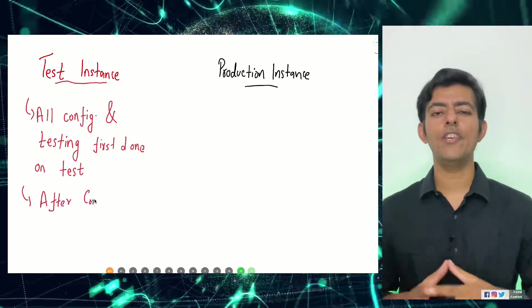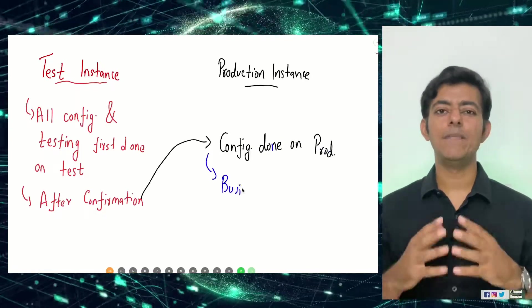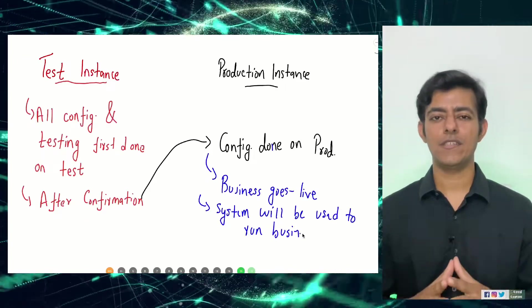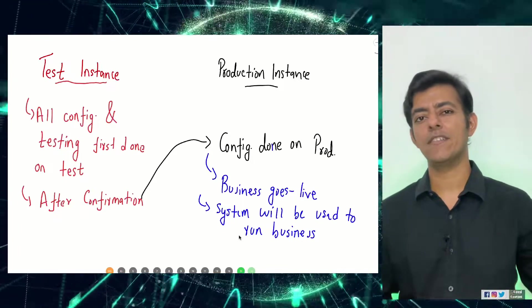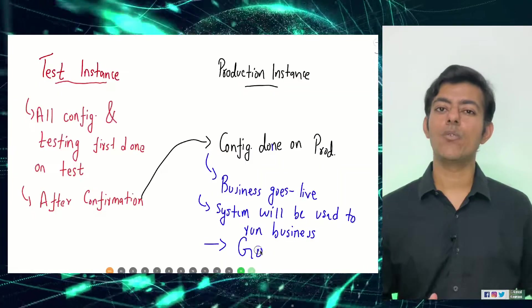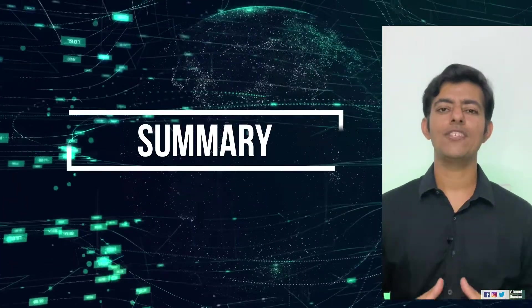There are two instances: a test instance and a production instance. Everything is first configured and tested on the test instance, and after sign-off, everything is moved to the production instance. After the production instance is set up, the business goes live — meaning the ERP is fully implemented at Amazon. Now every process, such as a customer purchasing goods, will flow through the ERP: Amazon receives the order through ERP, vendors are informed through ERP, and all further processes run within the application. This is a drastic change from the previous manual processes.